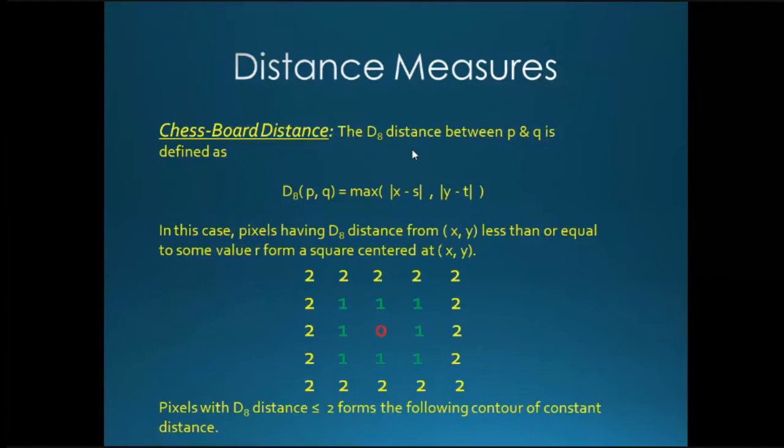Next, we will come for D8 distance. In D8 distance, if you see here, one pixel will be having eight neighbors. And if you want to find the distance, the equation is max of x minus s comma y minus t. So it is also called as chessboard distance.